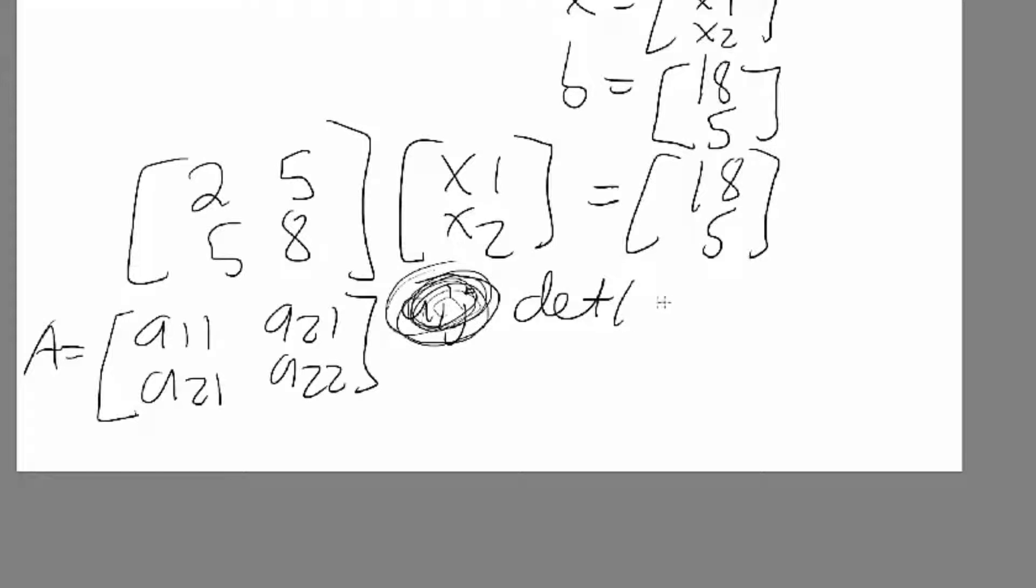To find the determinant of a generic matrix, you need to use this formula. It's a11a22 minus a21a12. That's supposed to be a12 because it's in row one, column two. You use this to find the determinant, and you'll end up with a scalar number. This number will tell you the properties of the matrix.